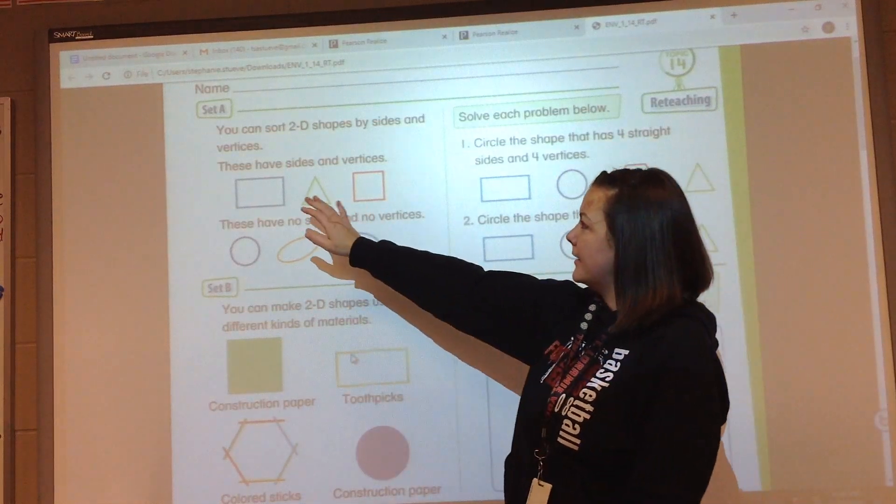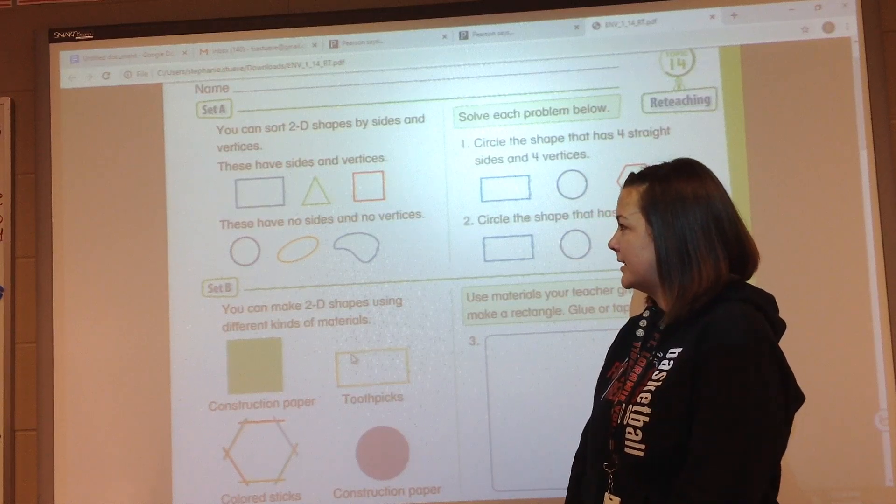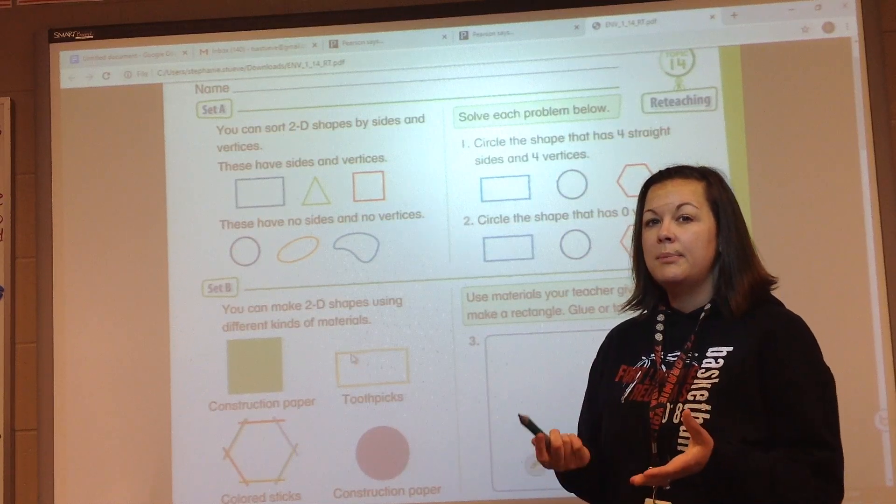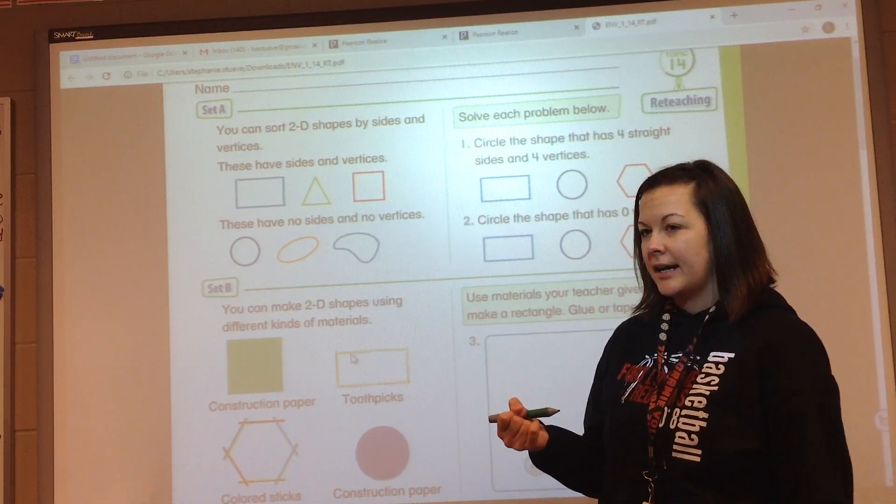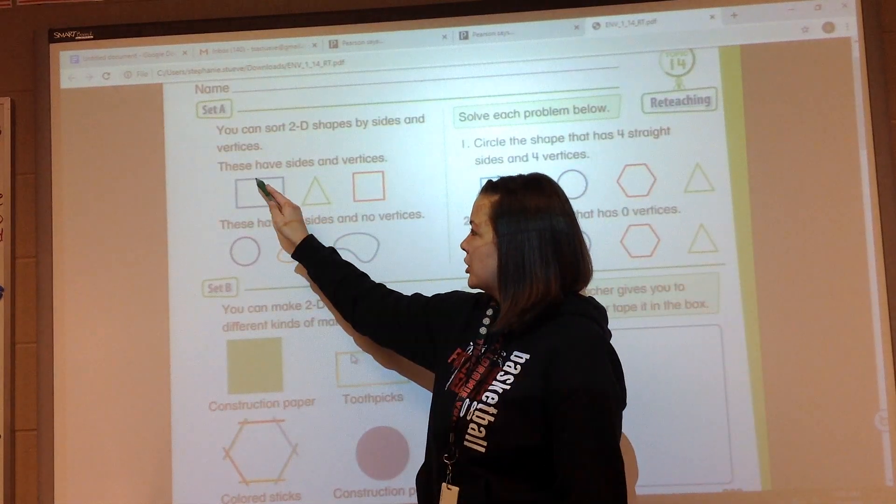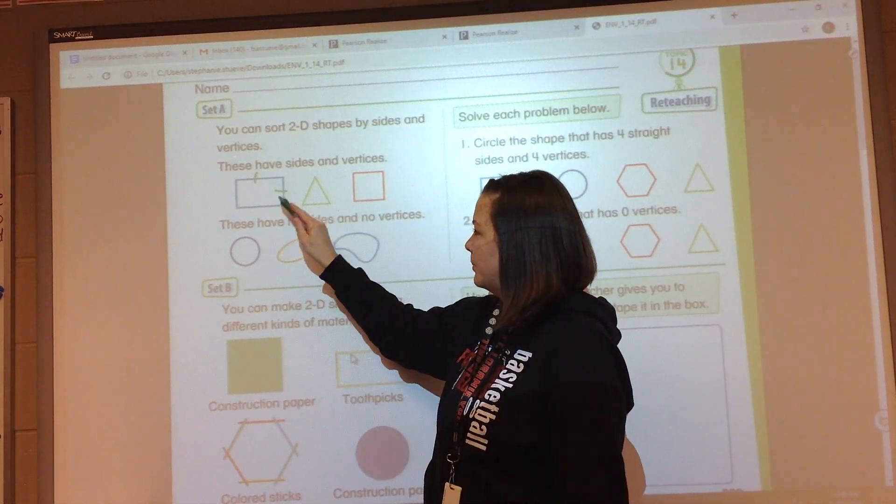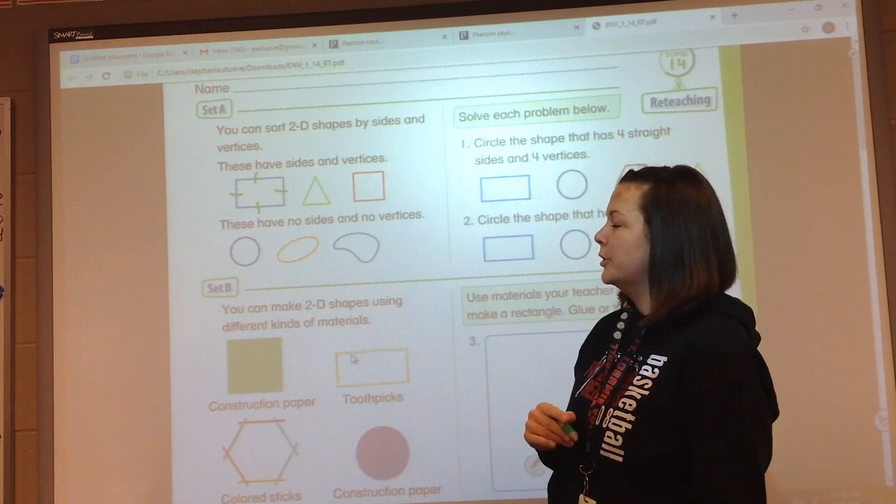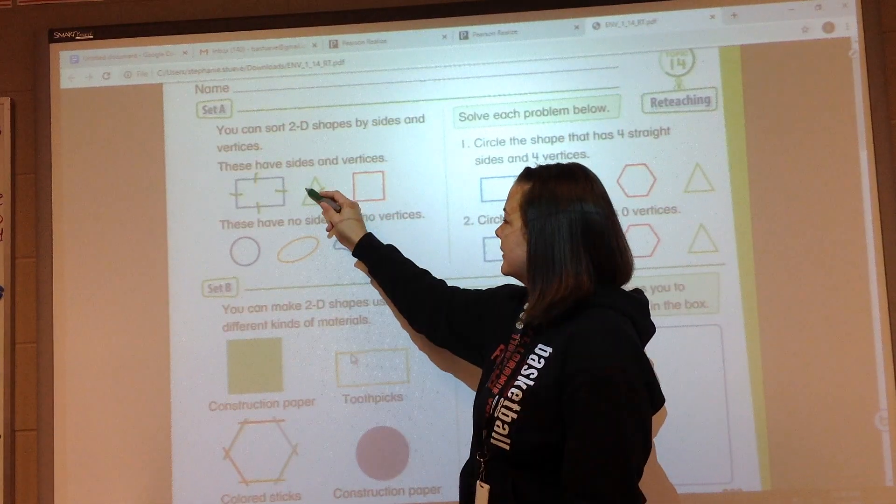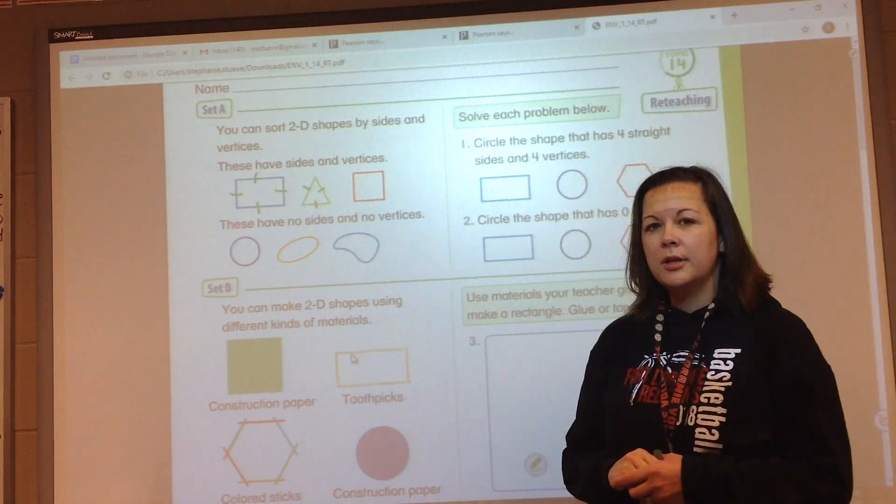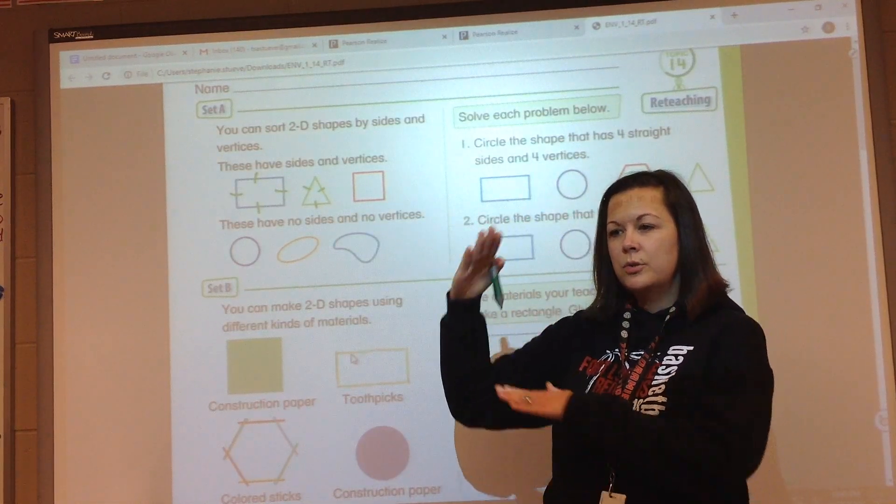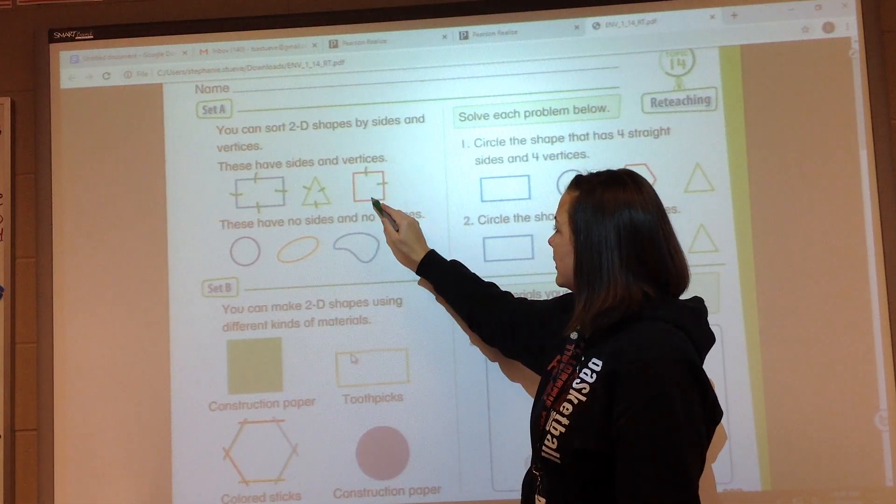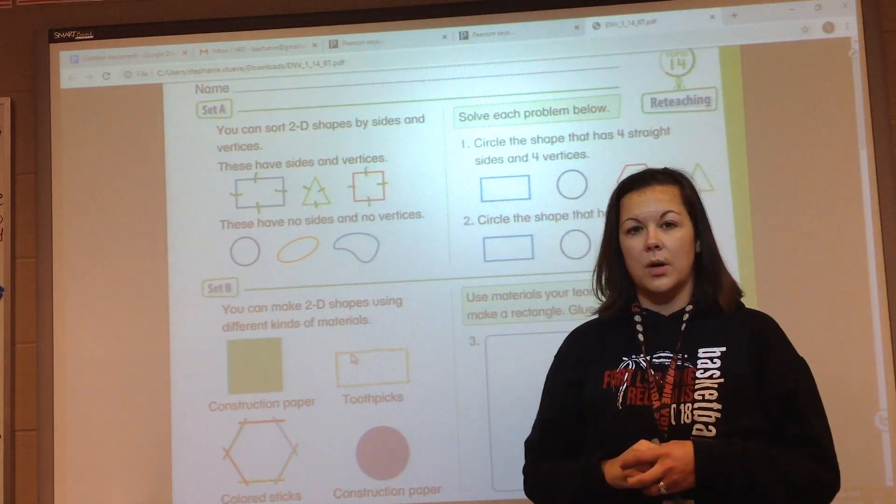Let's take a look at Set A. It says you can sort 2D shapes by sides and vertices. These have sides and vertices. What I would like you to do is get out a pencil and let's mark the sides first of each shape here. All of the sides we put a little dash. This one has four sides, so let's move over to the triangle, mark your sides. Remember the sides are the straight lines where two of them come together to form a point or vertices. And then mark your square. Those are all sides.